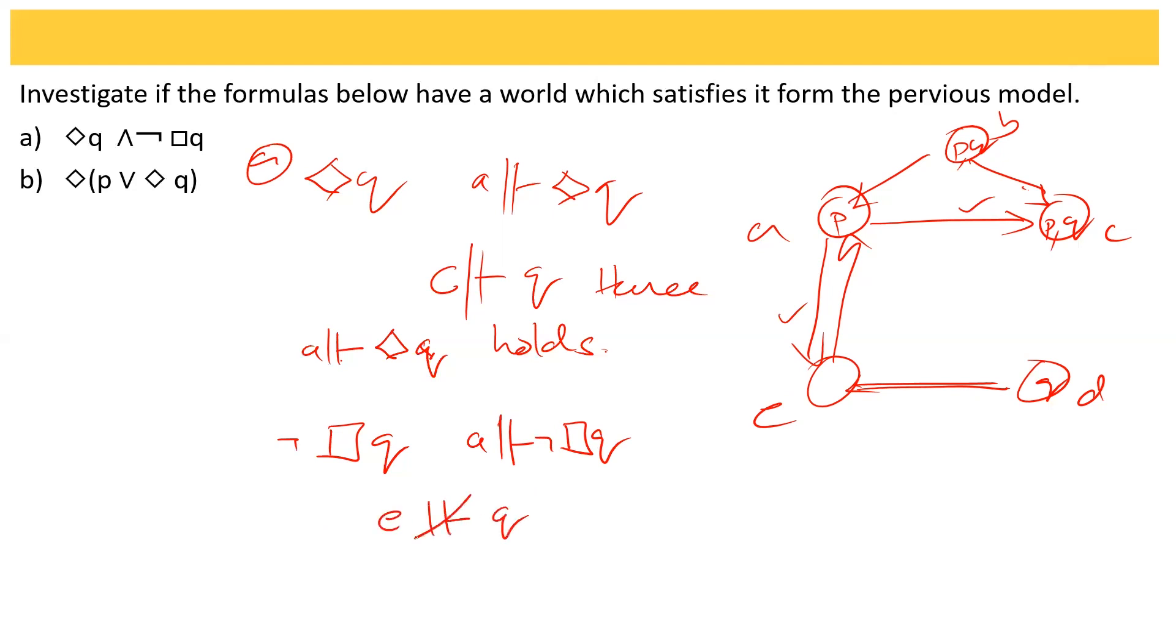This is not true. Hence A not of box Q is true. So this entire thing - A and not box Q holds. We found a path in this model for which this formula holds.